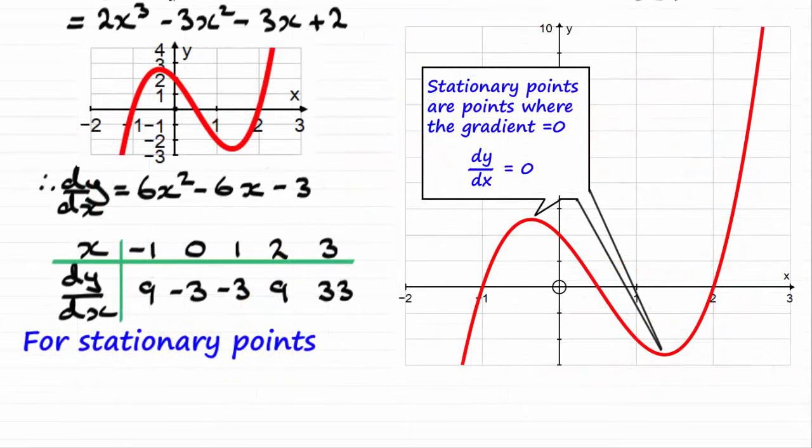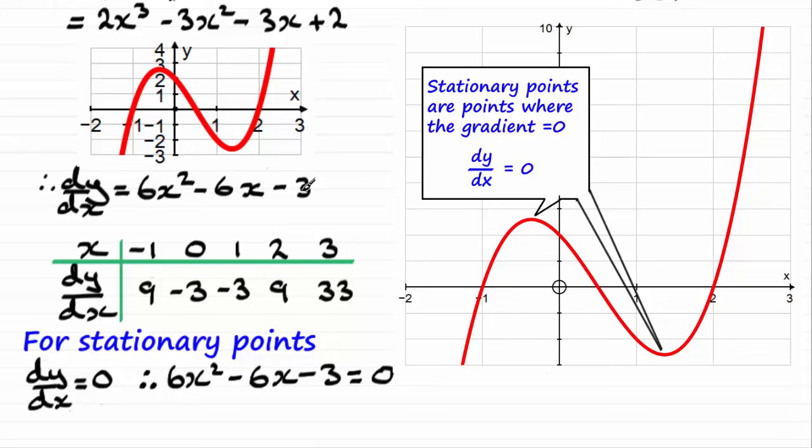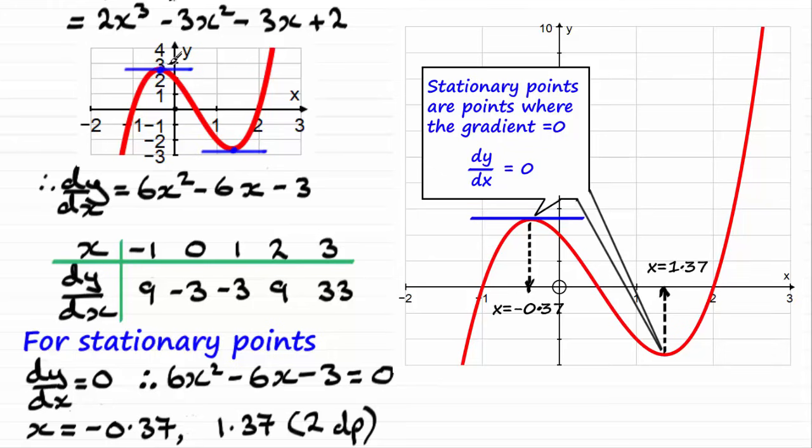Now if I go back to our earlier graph, when that gradient is 0, dy by dx is 0, I end up with that quadratic equation equaling 0. And to solve this, if I was to use the quadratic formula, what we find is that the values of x are minus 0.37 and 1.37 to two decimal places. And those stationary points would be at these points here, where that gradient is 0. You can't read it that accurately from the graph, but this x coordinate here is the minus 0.37 and this x coordinate here is the 1.37.